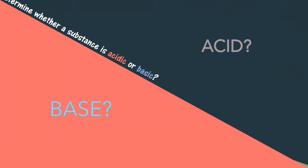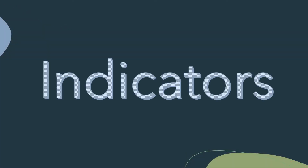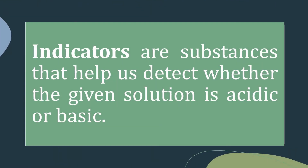Without tasting, how do we determine whether a substance is acidic or basic? We use a special type of substance called indicators. These indicators help us to detect acidic or basic solution by changing their color differently when added to these solutions. Indicators are substances that help us to detect whether the given solution is acidic or basic.